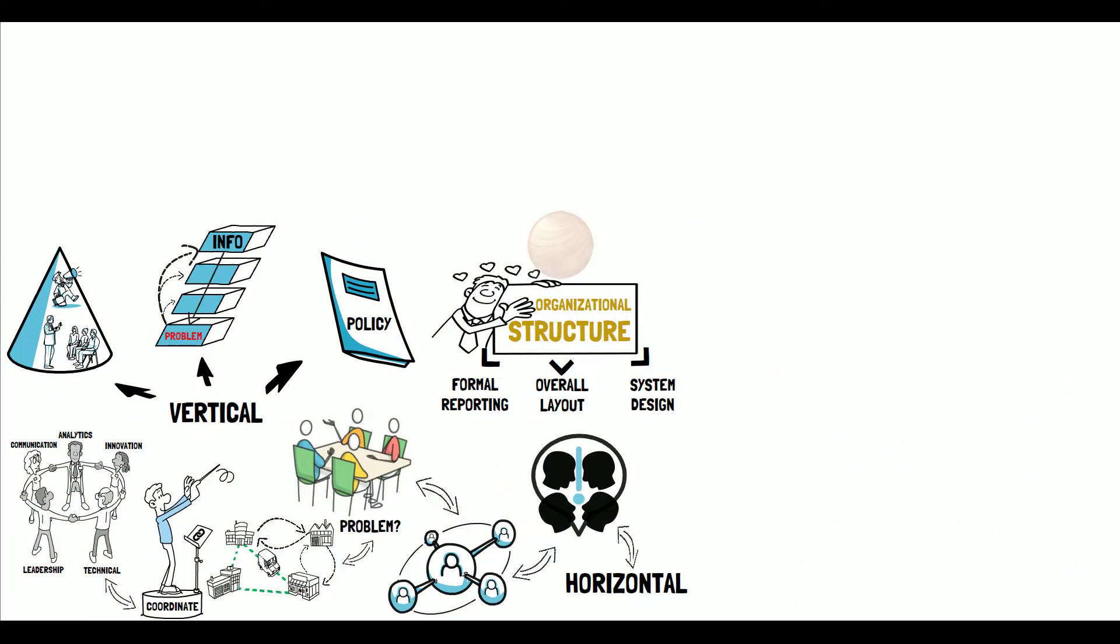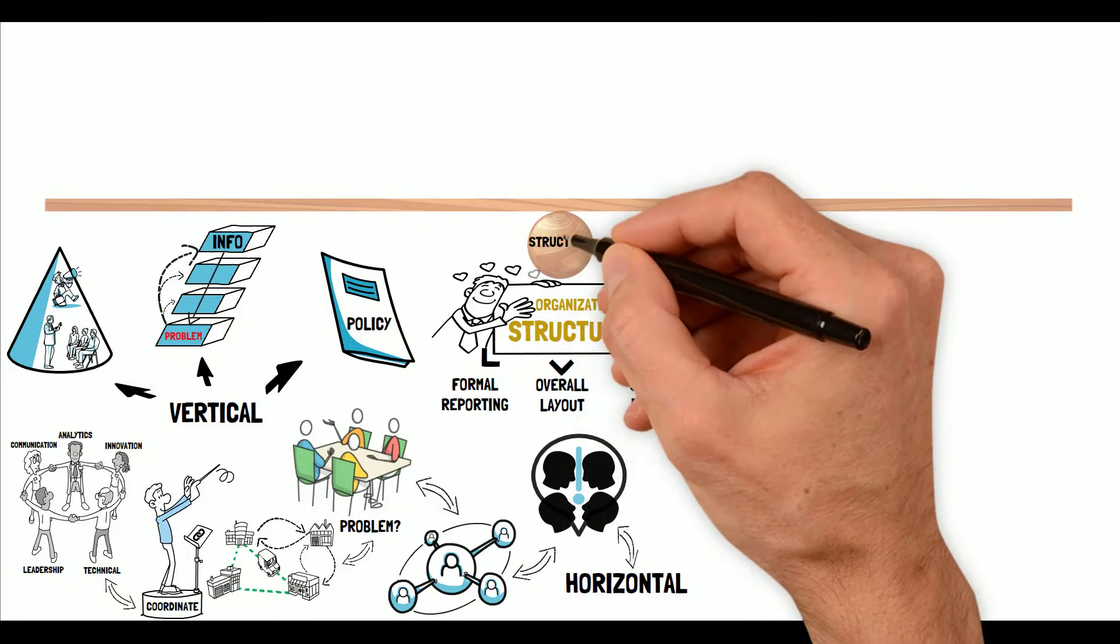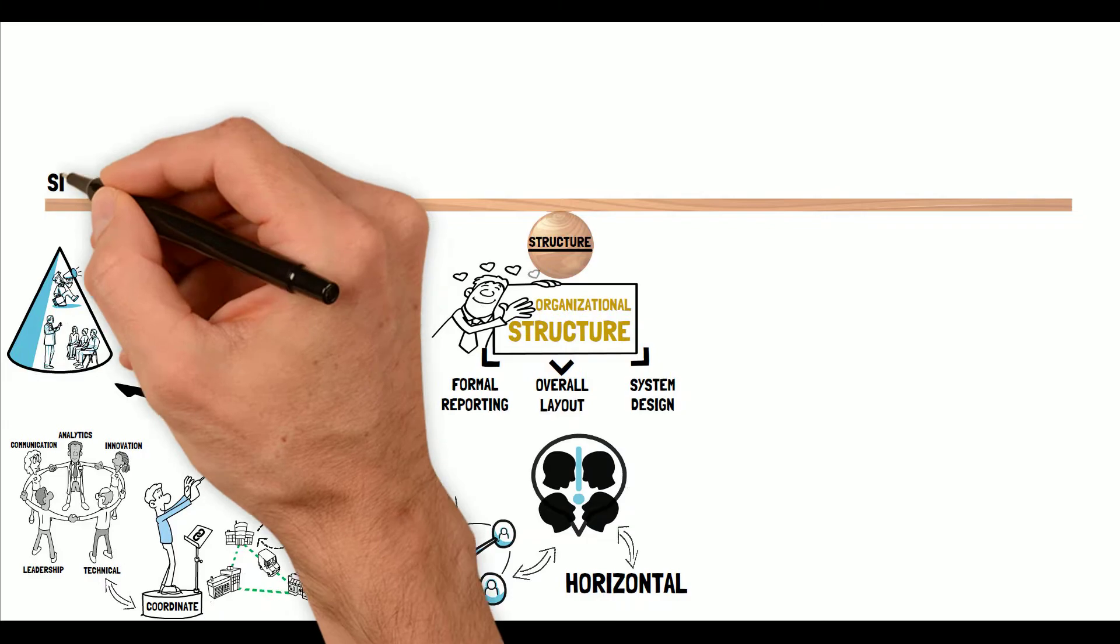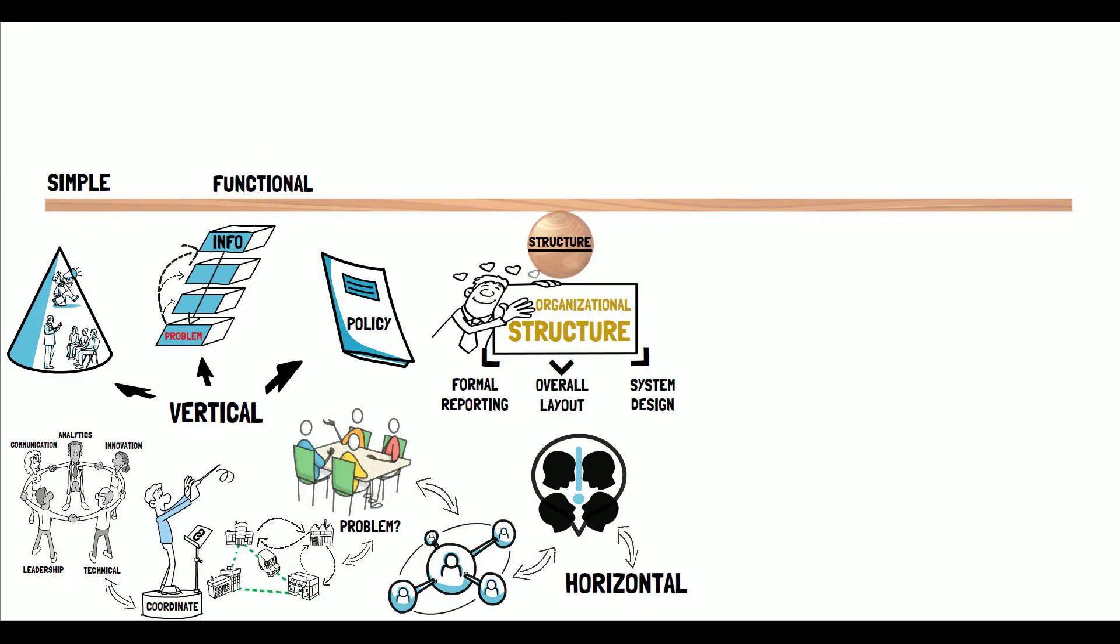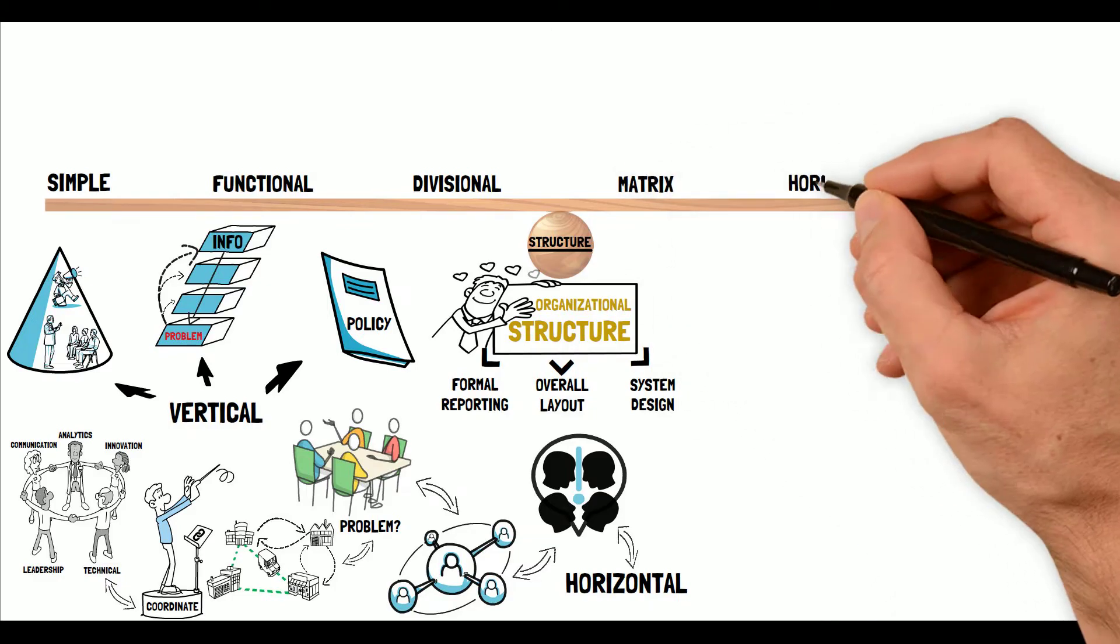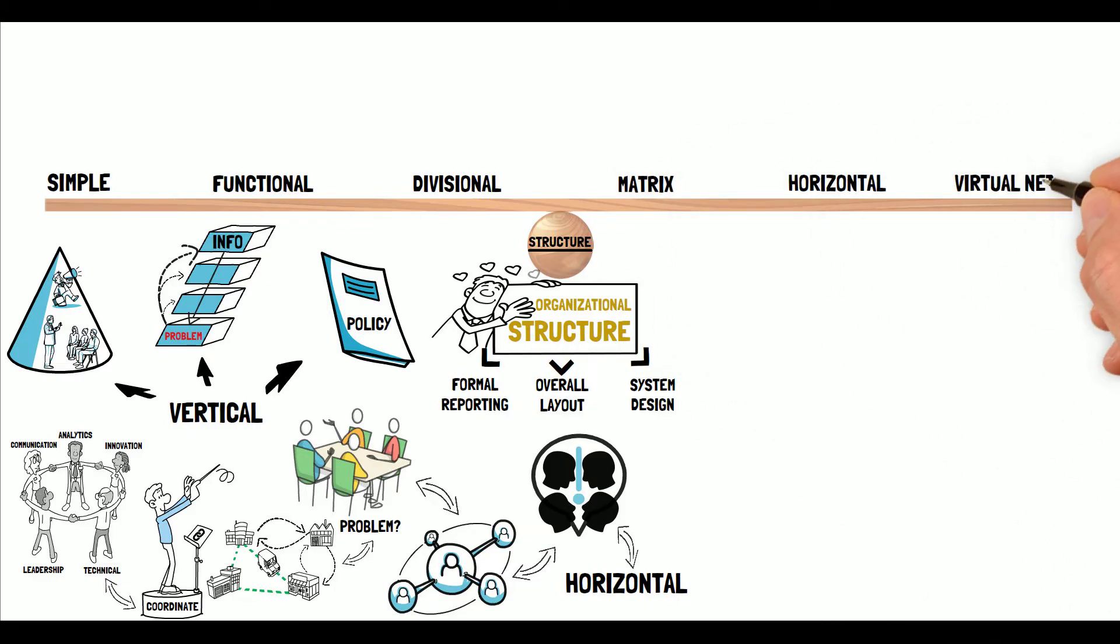In organizations, the most common department grouping of the traditional models, which include simple, functional and divisional, and the newer models, multifocused, horizontal and virtual network. Though, most commonly, organizations tend to use more than strictly one model, combining them to a hybrid structure.